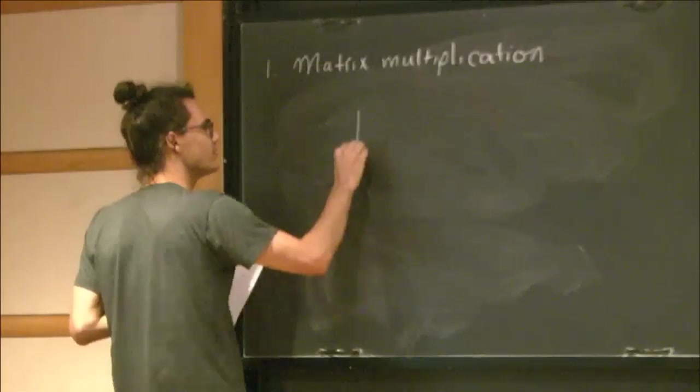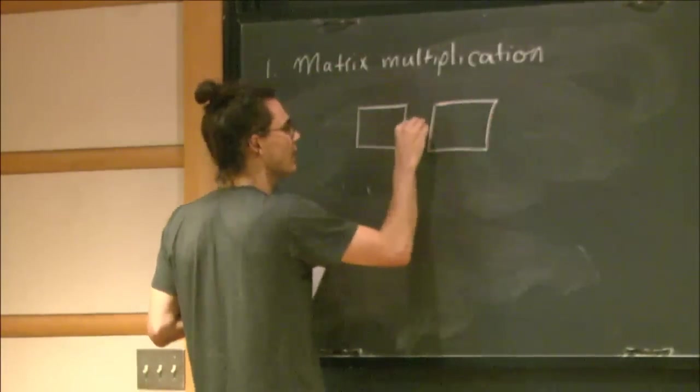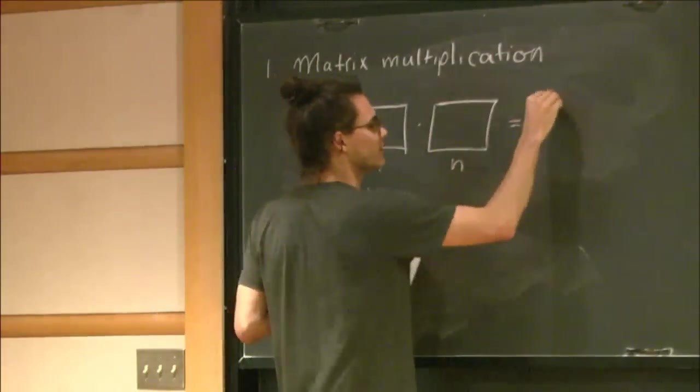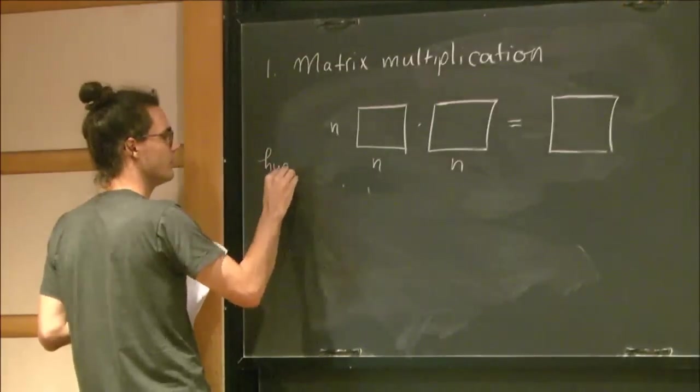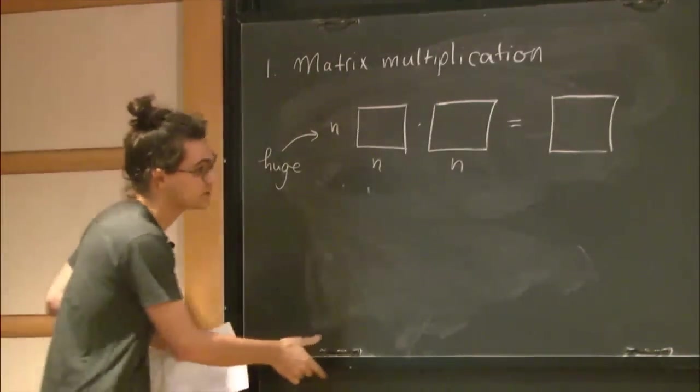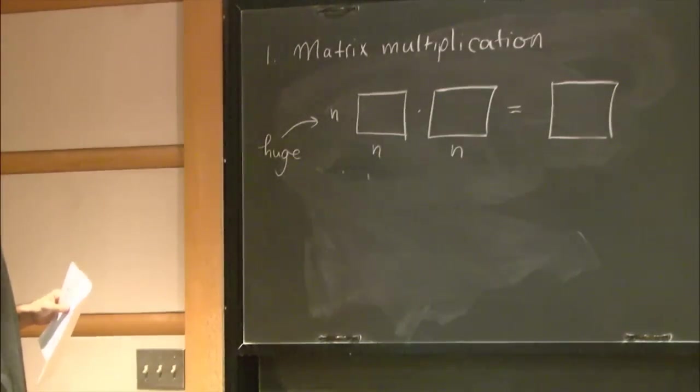So I give you two matrices, and they're big matrices. And I ask you to compute your matrix product. So n is huge. And the question is, how many field operations does it need?